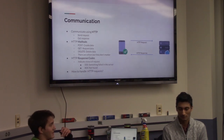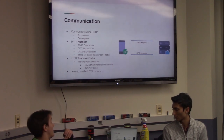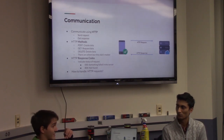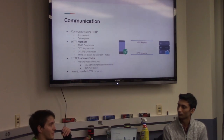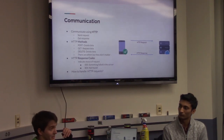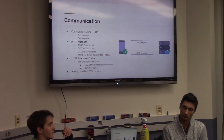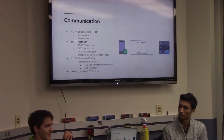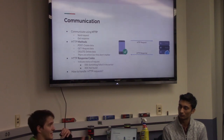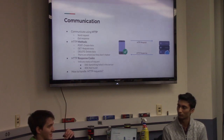HTTP does this primarily through a series of methods. Each method delineates a different type of action you can take on the backend. The two most common are GET and POST requests. HTTP GET is probably the simplest — all you do is request data. Whenever I type in www.google.com, that's sending a GET request to Google's servers to give me the homepage. As the client, I'm requesting a resource from the server.